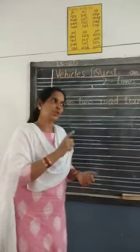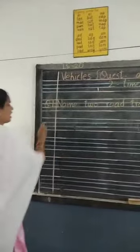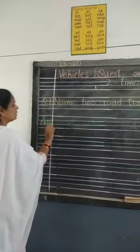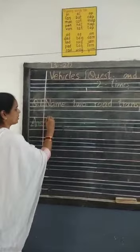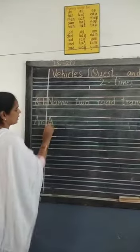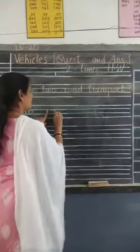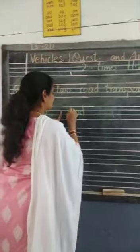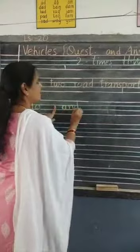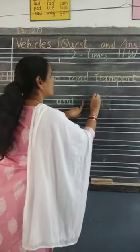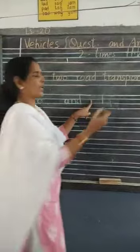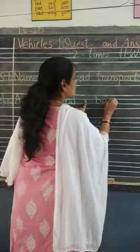The vehicles that move on the road — we will write two. A-N-S — Answer. We will write first auto: A-U-T-O. Finger space, A-N-D, finger space, then write bus: B-U-S. You can write car, truck, van — anything you can write, children. We wrote auto and bus. Now leave a line and write question number two.